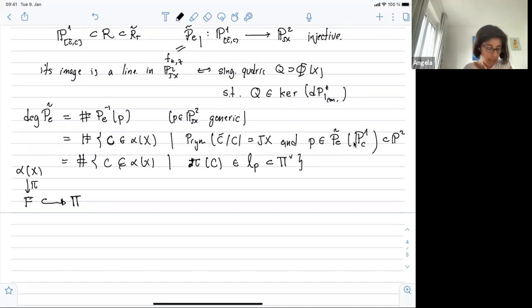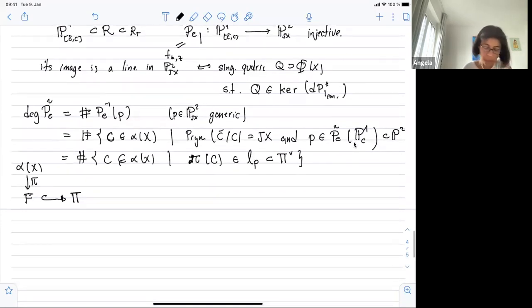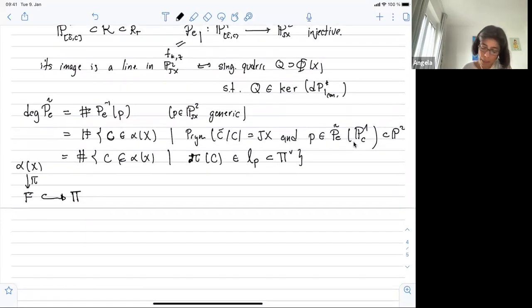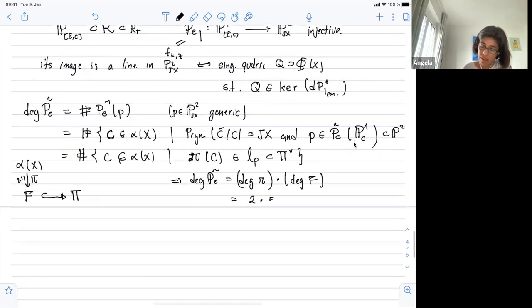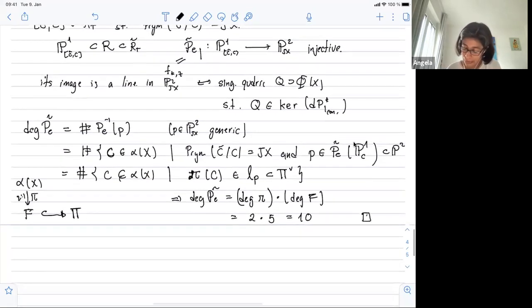Okay. So what is this degree? We're almost done. So the degree of P A tilde is the degree of my double covering. So it's two times the degree of F, which is a quintic, plain quintic. This is the 10. And that's all.